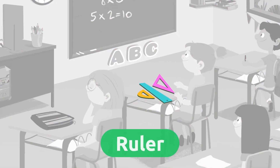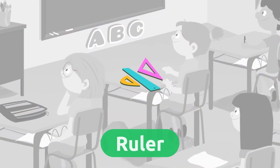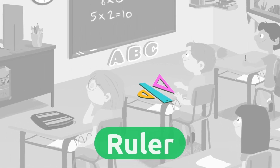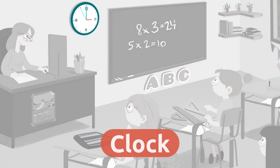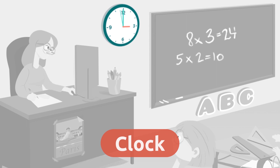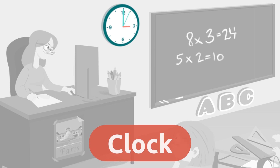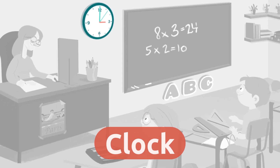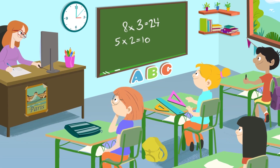The ruler is a tool used to draw straight lines or to measure. Ruler. The clock indicates hours and minutes and tells us when our school day ends — recess time! Clock.